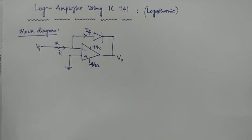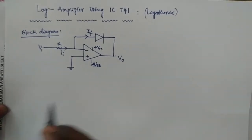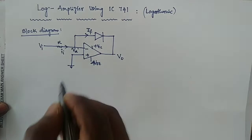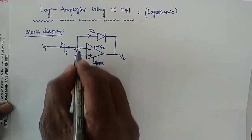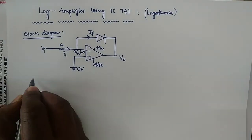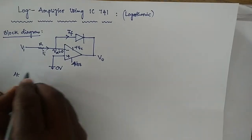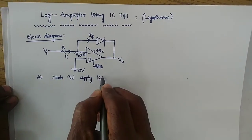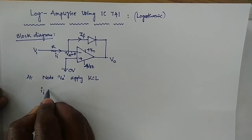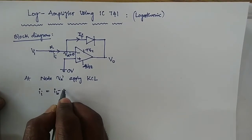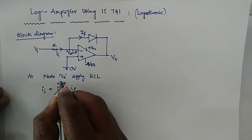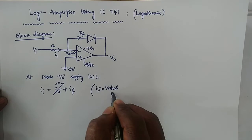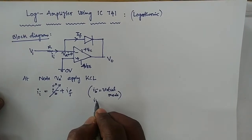To calculate the relationship between output voltage and input voltage, first calculate the input. Due to the virtual ground, the voltage at the inverting node VA is 0. Applying KCL at node VA: the input current is II, and the outgoing currents are IB minus and IF. Since IB minus equals zero due to virtual ground, IB minus equals IB plus.